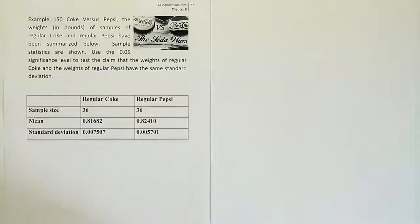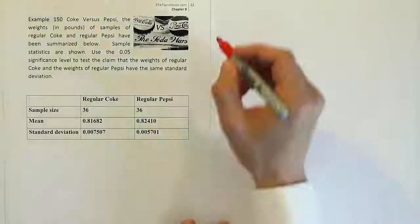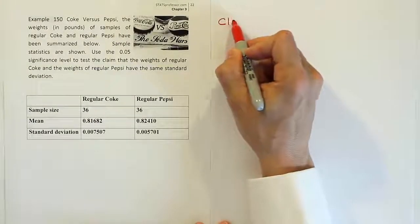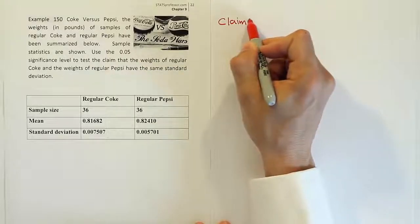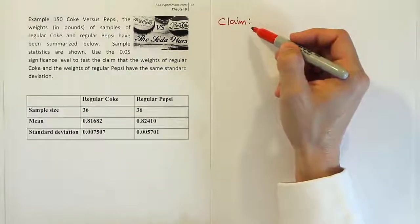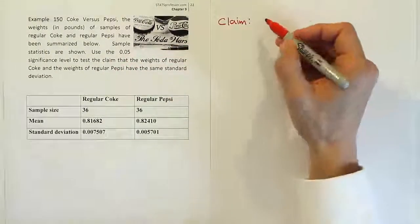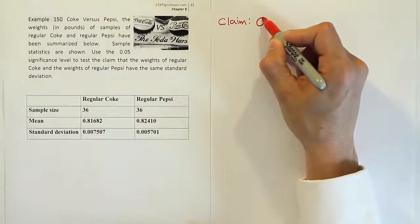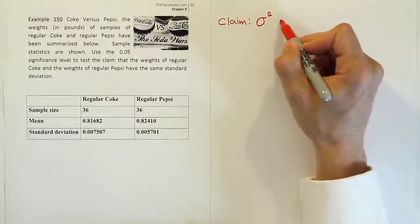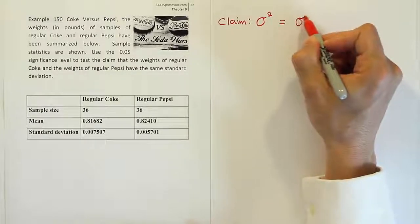The thing I want to talk about here in this test, since we've already done one of these in an earlier video, is I want to get into the details a little bit of why the test is conducted the way it is. So let's write the claim down first. It says, test the claim that they have the same standard deviation, so I would say the variance for one is equal to the variance for the other.